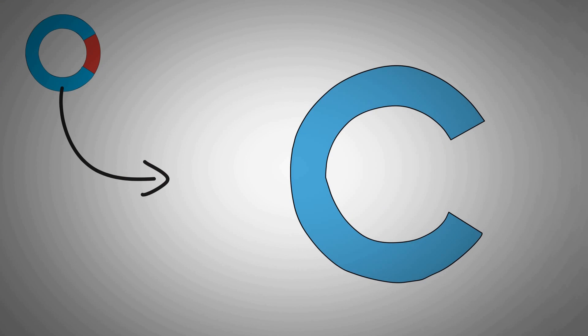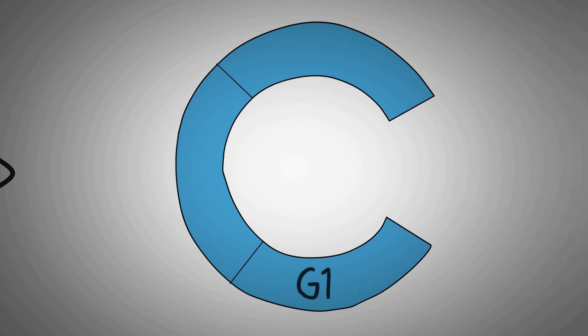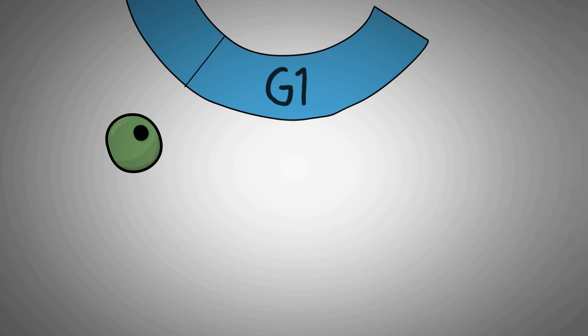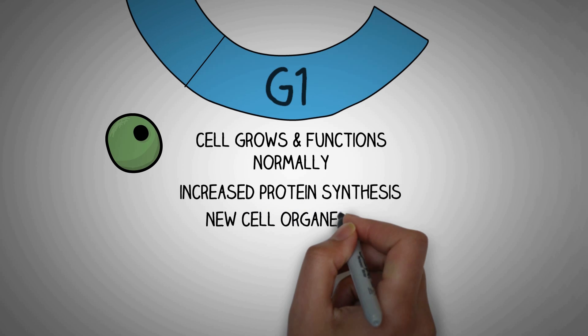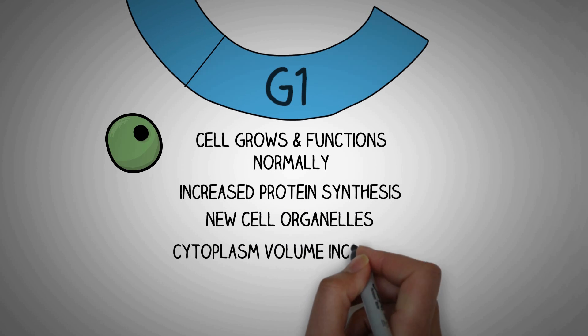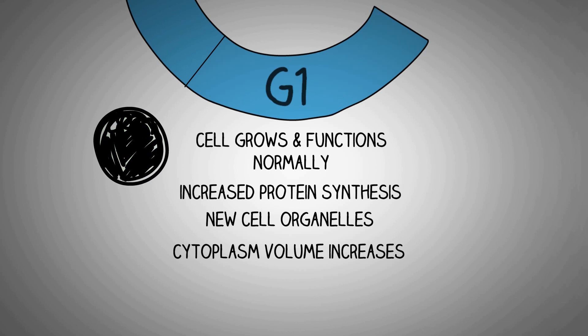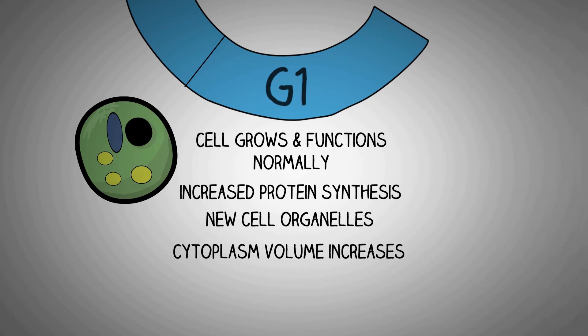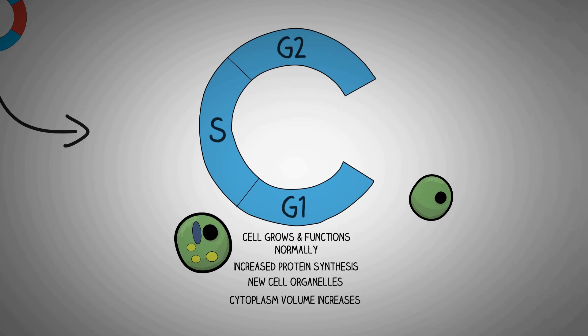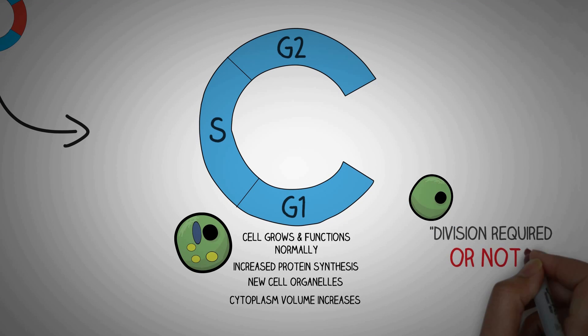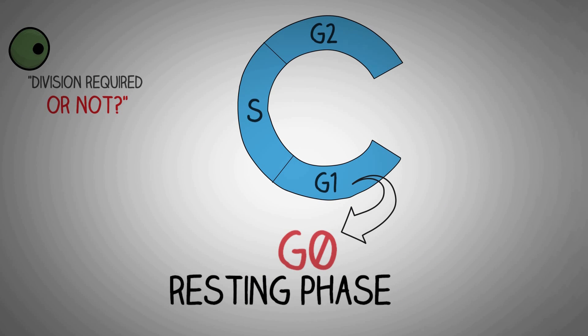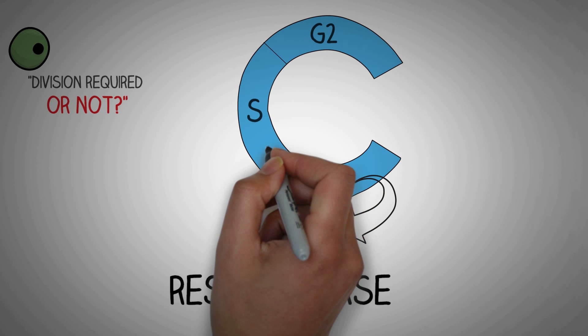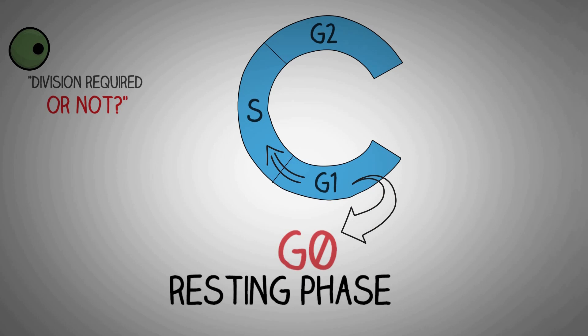The interphase is divided into three phases: the G1, S and G2 phase. During the gap 1 phase or the G1 phase, the cell grows and functions normally. The G1 phase is marked by increased protein synthesis and the cell also doubles its original size. Now the cell organelles are produced and volume of the cytoplasm also increases. After the G1 phase, the cell can decide whether it wants to divide or not. If the cell senses that cell division is not required, it passes into the G0 phase during which the cell remains silent or if it decides to go on with the cell division, it passes into the next stage of the interphase known as the S phase.